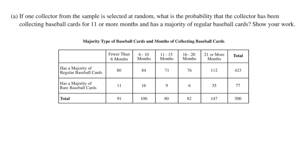The first part asks a couple of probability questions. The first one says: if one collector from the sample is selected at random, what is the probability that the collector has been collecting baseball cards for 11 or more months and has a majority of regular baseball cards? I'm going to highlight everything that fits that bill. These 71 people have a majority of regular baseball cards and are in the 11 to 15 months category. These 76 people collect regular cards and have been collecting 16 to 20 months. These 112 people collect regular cards and have been collecting 21 or more months. All three groups meet the qualifications: 11 or more months collecting and a majority of regular baseball cards.